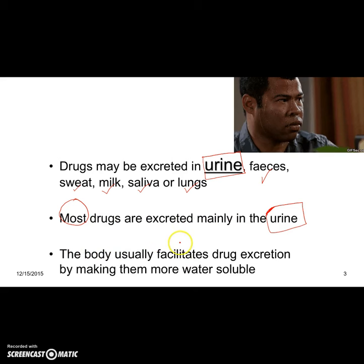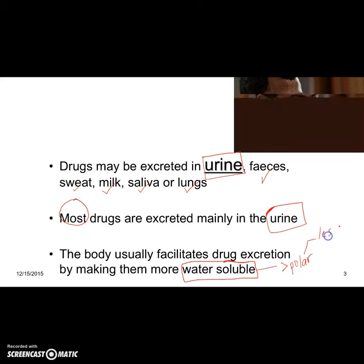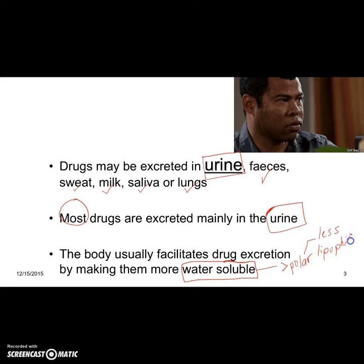The body facilitates drug excretion by making drugs more water soluble. As discussed in the lecture on drug metabolism, the liver has phase one and phase two processes. Phase one makes the drug more water soluble, meaning more polar and less lipophilic. When a drug is less lipophilic, it is less likely to be reabsorbed and more likely to be excreted in the nephron of the kidney.